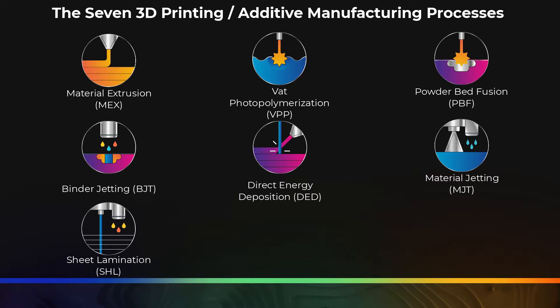Each of those processes is unique in that it enables 3D printing objects with specific features and advantages like specific material, strength, or fine details. This uniqueness makes each more suitable for specific and unique applications.